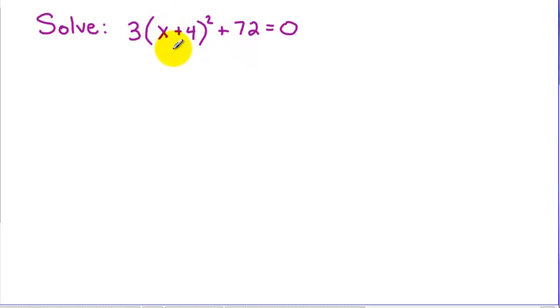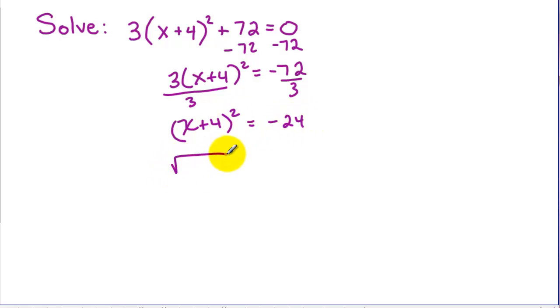So we want to get the part that's squared by itself, so I'm going to subtract 72 from both sides. So that equals negative 72. We want to divide by 3. And I have x plus 4 quantity squared equals negative 24. And undo this square, we square root both sides. And we remember there's both a positive and a negative square root.